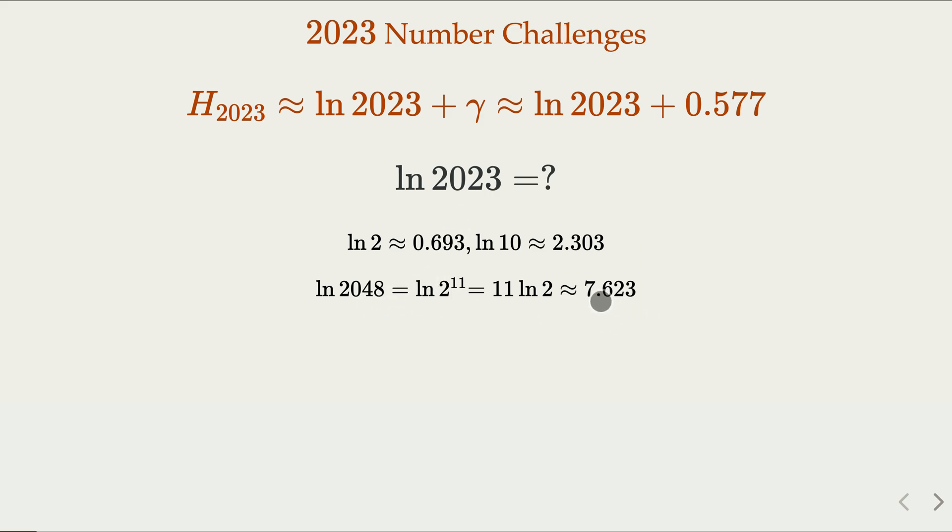So we have upper bound 7.6. How about a lower bound? With log 2 and log 10, you probably want to use log 2000. So 2000 equals 2 times 10 to the third power.